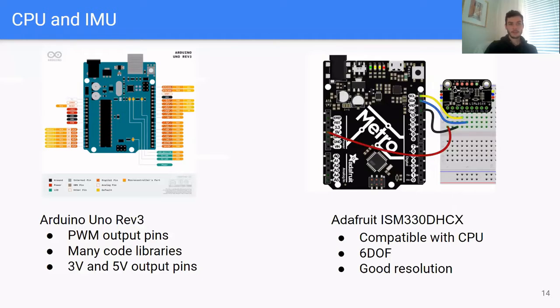For the CPU and IMU, we went with the Arduino UNO REV3 for the CPU because it has the required PWM output pins, it has many code libraries, and has 3 volt and 5 volt output pins to power our sensor. We chose the Adafruit IMU because it's easily compatible with our CPU, it has the required 6 degrees of freedom, and has relatively good resolution for our purposes.